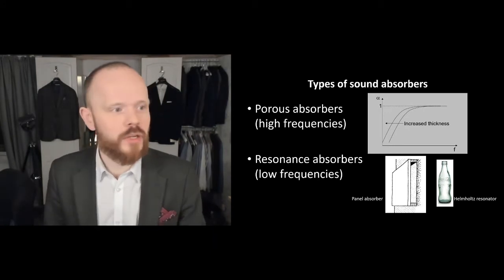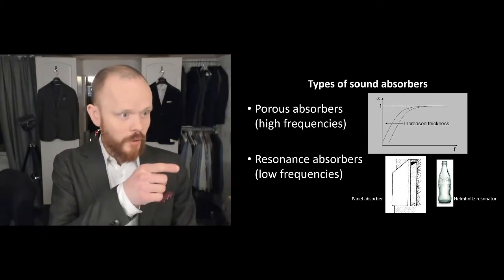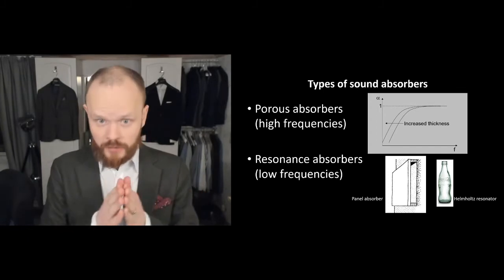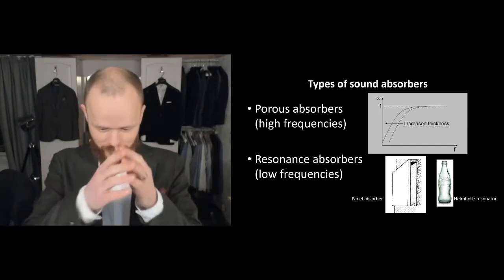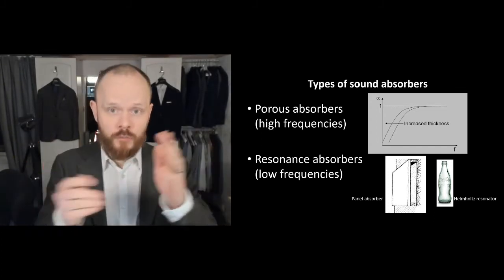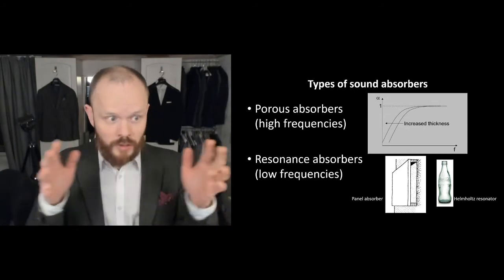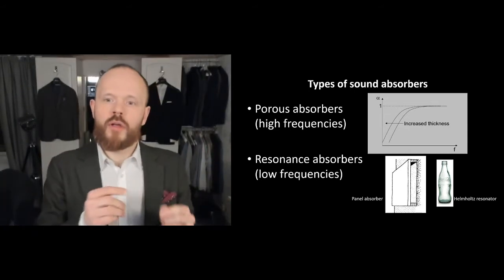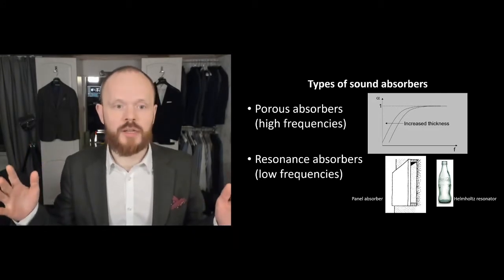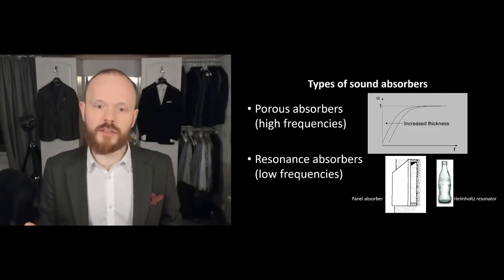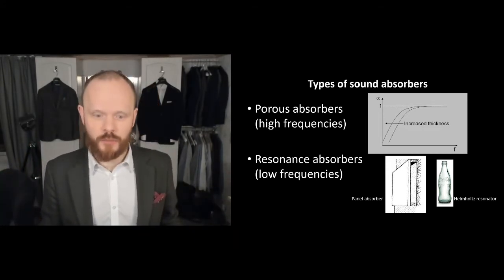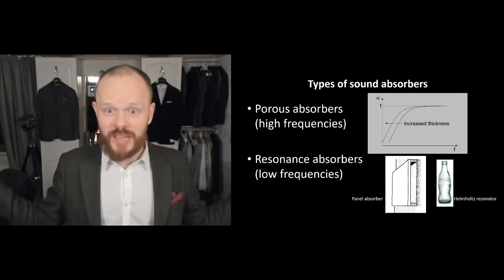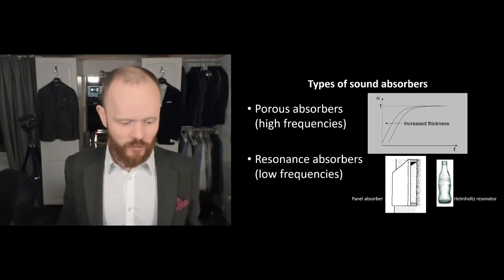which are very good for high frequencies. You can see in this graph that as the thickness of the porous absorber is increased, the frequency range where it's effective also increases. So the lower in frequency you want to go, the thicker absorber you're going to need. However, this has some practical consequences, which means you cannot reasonably use a one-meter thick layer of mineral wool — that's not practical or economical.